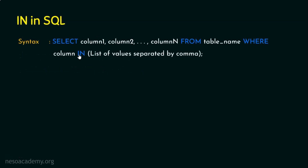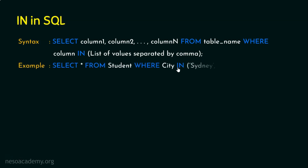The syntax is: SELECT column1, column2, ... columnN FROM table_name WHERE column_name IN (value1, value2, ...). Just specify the list separated by commas inside parentheses. All SQL statements end with a semicolon.